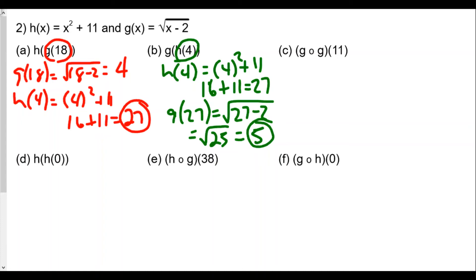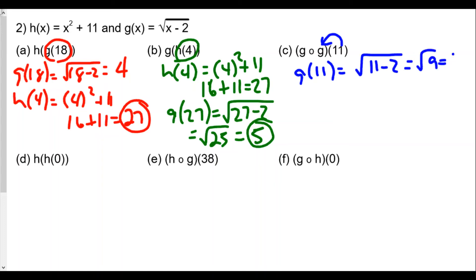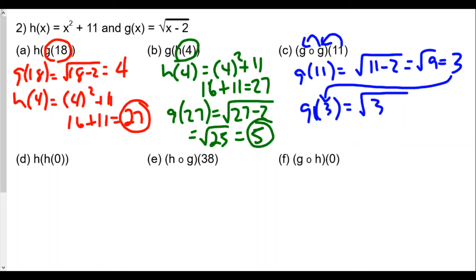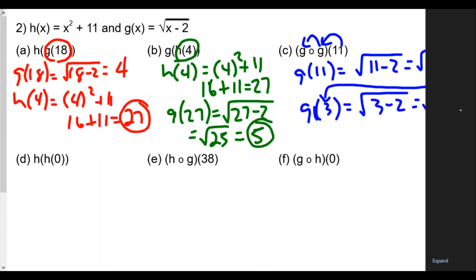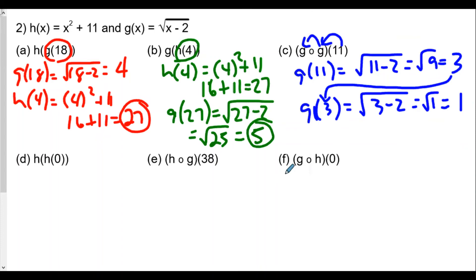Continuing with g of g of 11, so 11 goes into g. g of 11 is the square root of 11 minus 2, which equals the square root of 9, equal to 3. But this 3 now goes into g again, because we go right to left. So g of 3 gives us the square root of 3 minus 2, which is the square root of 1, equal to 1.